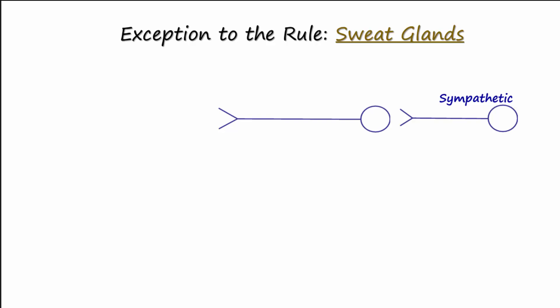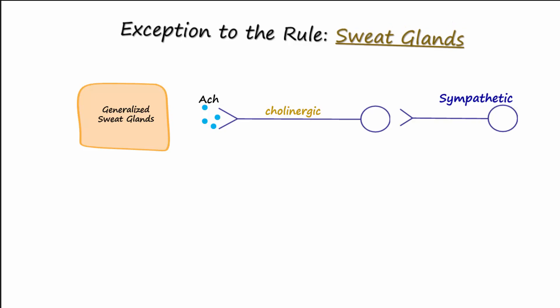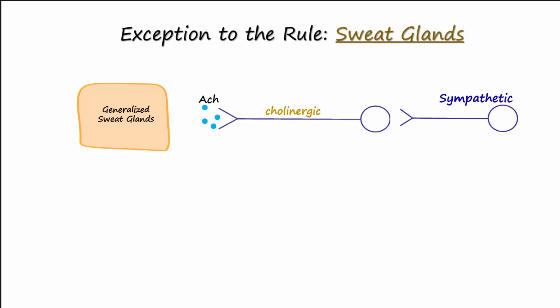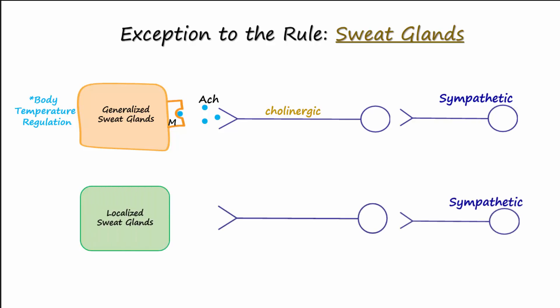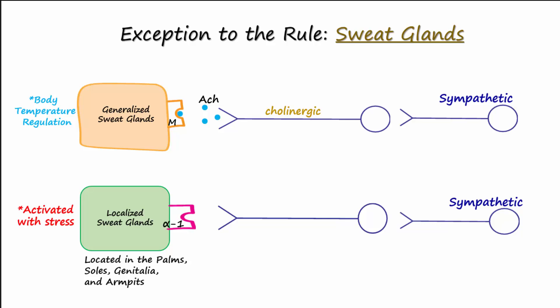Postganglionic neurons of the sympathetic division that innervate glands responsible for generalized sweating are cholinergic and therefore secrete acetylcholine. This is the exception to the rule, since postganglionic sympathetic neurons usually secrete norepinephrine. After release, acetylcholine crosses the neuro-effector junction and binds to muscarinic receptors on these sweat glands. Localized sweat glands, activated by stress and located in the palms, soles, genitalia, and armpits, express alpha-1 receptors and respond to norepinephrine.